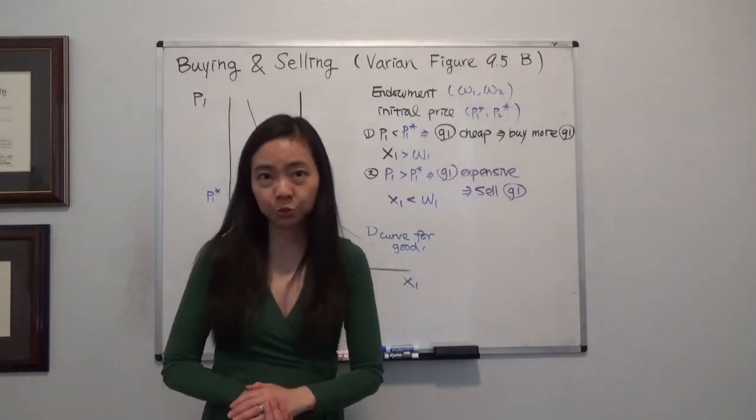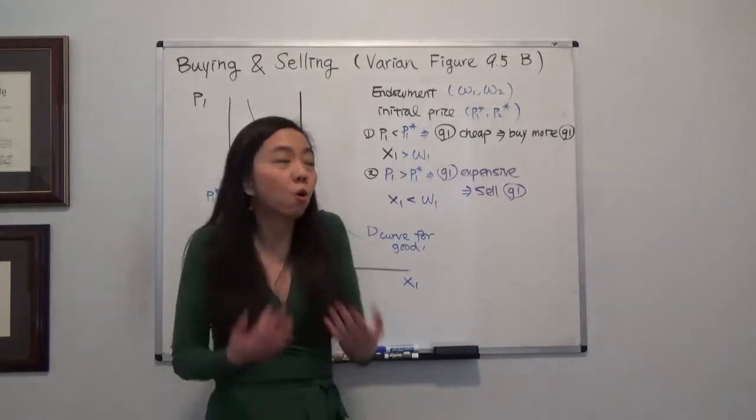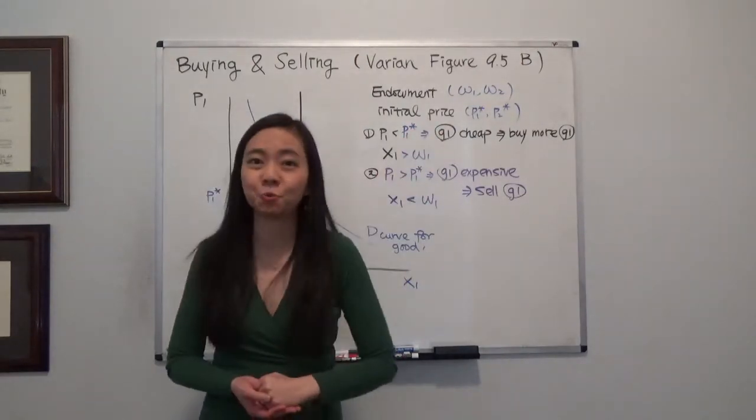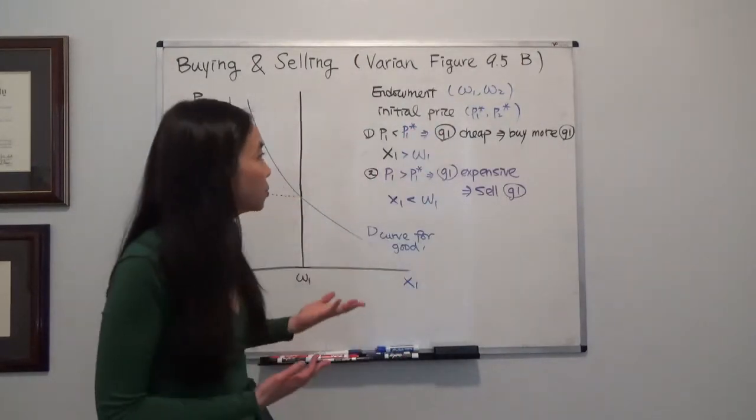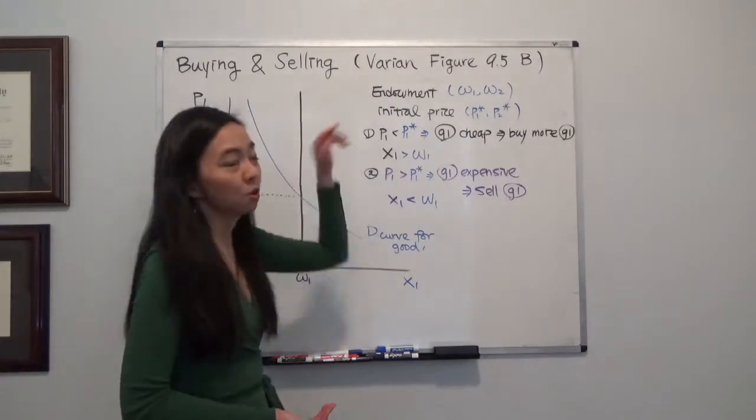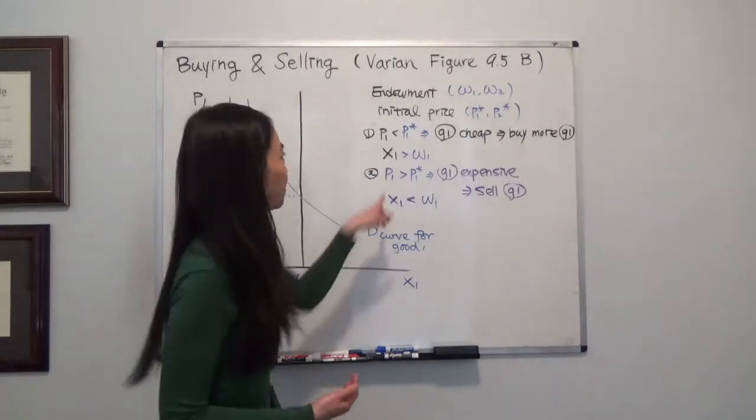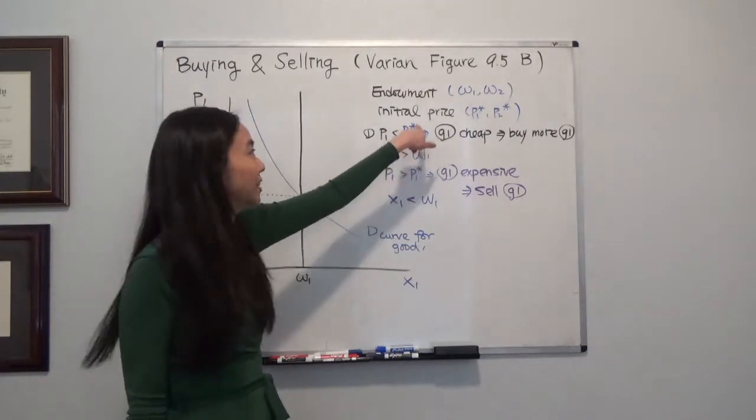So now suppose the price of good 2 does not change and we only have the price of good 1 that changes. So suppose we have a new price P1 which is lower than our previous price of good 1, P1 star.